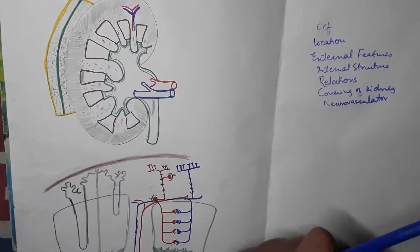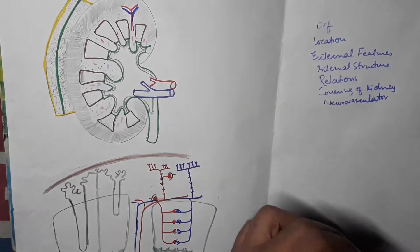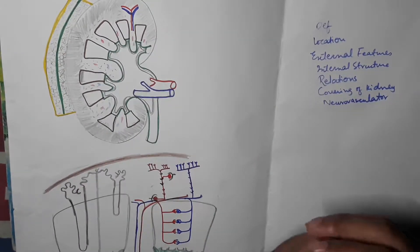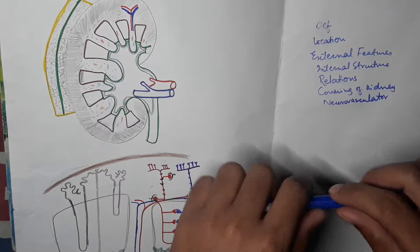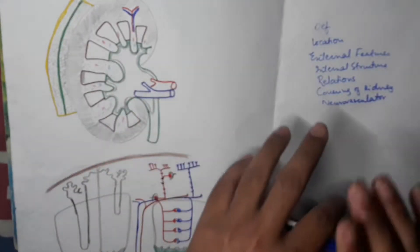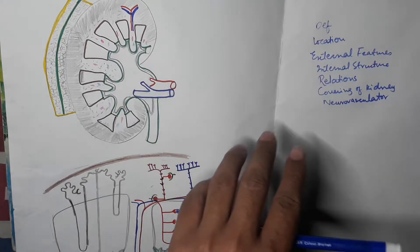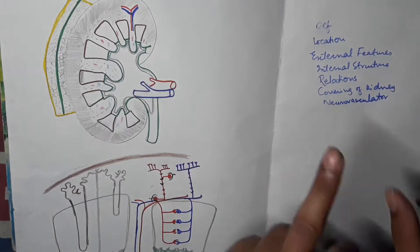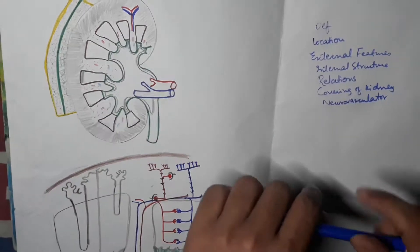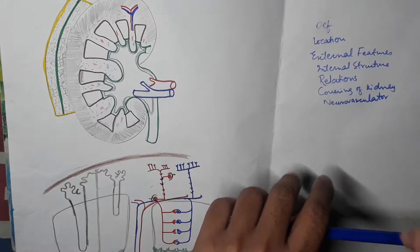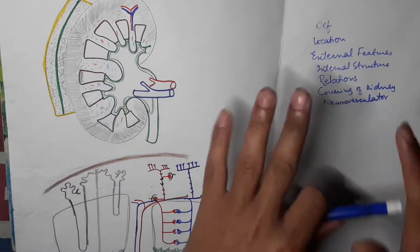First, let's talk about the definition. Looking at the kidney, you can see its bean shape. We have two types of definition: anatomical and physiological. Anatomically, the kidney is a bean-shaped pair of excretory organs situated on the posterior abdominal wall on each side of the vertebral column, behind the peritoneum. Physiologically, the kidney is a pair of excretory organs which removes waste from the body and also maintains the pH of the body and osmoregulation.